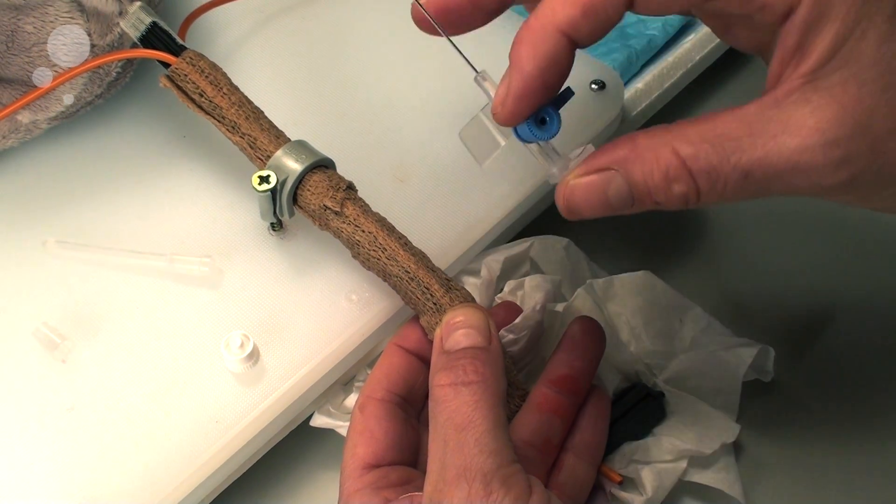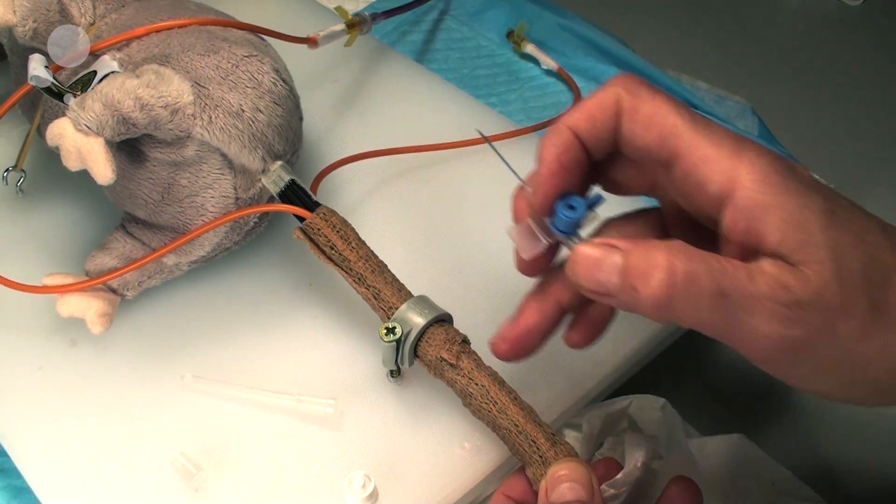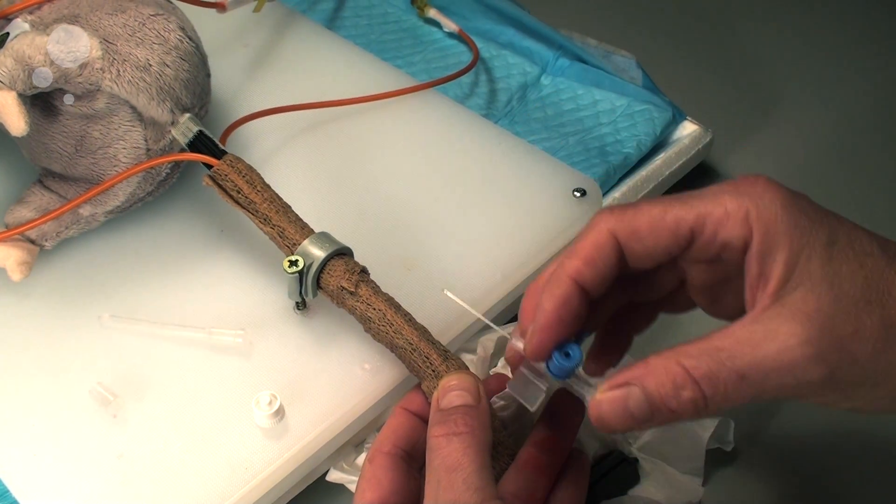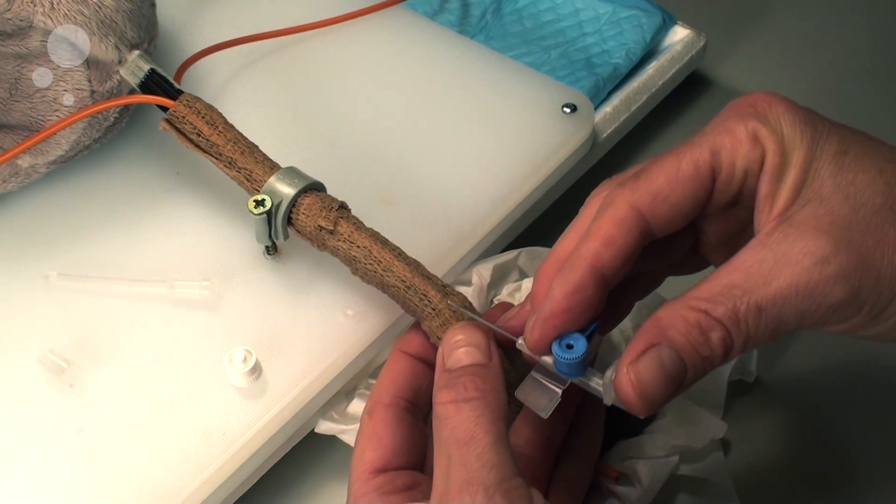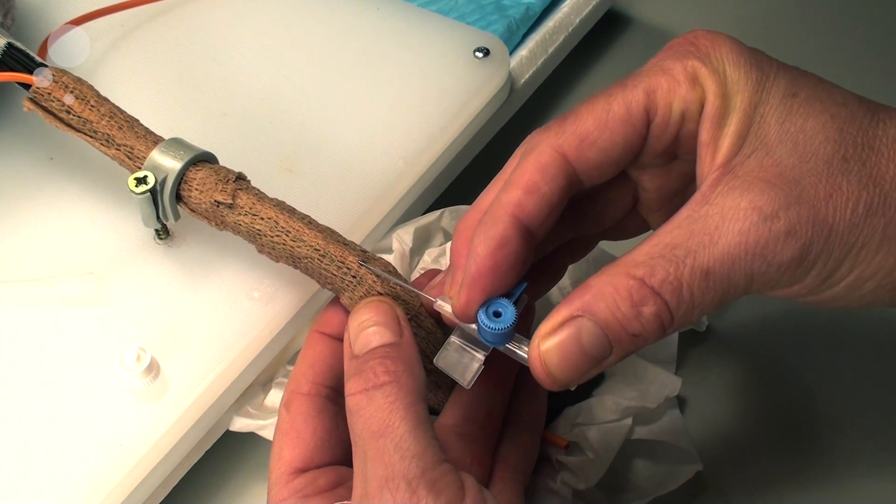When you work on the tail vein of a rat to put in the catheter, go out two-thirds of the way before introducing the catheter. You need to go like this, introducing it into the vein.